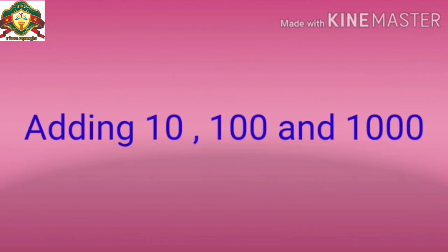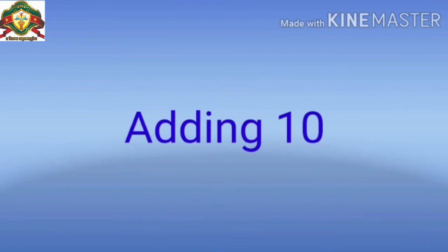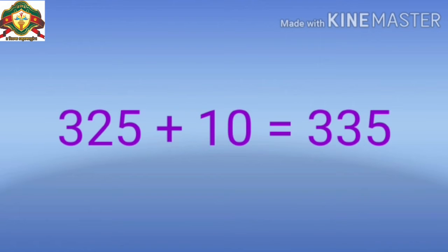Now first we learn some examples of how we add 10, 100, and 1000 to any number. Look at this example — Adding 10. The number is 325 plus 10. So dear student, when 10 is added to a number, the value of the digit at the 10th place increases by 1.